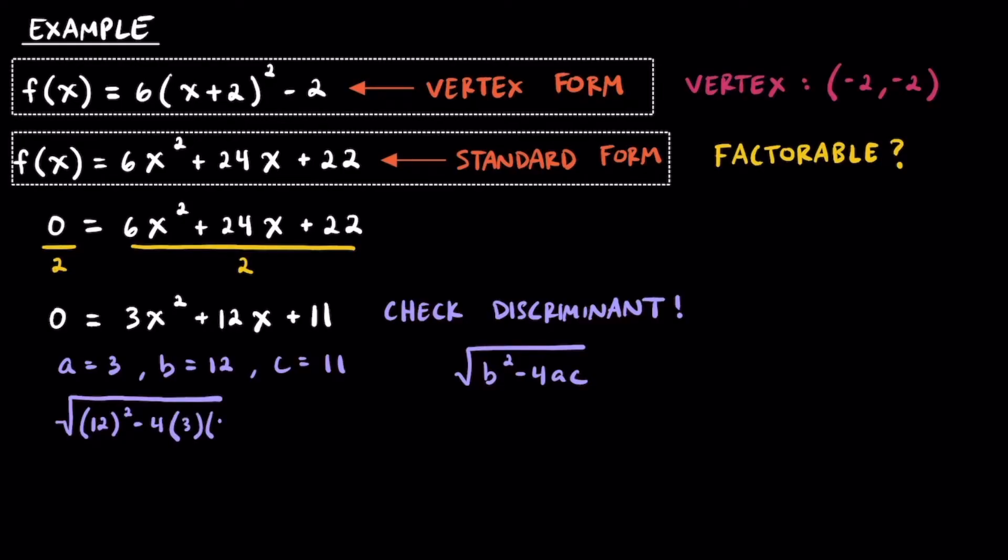Substituting in these values for a, b, and c, we find out that the discriminant value is a square root of 12. Because 12 is not a perfect square, we know that this quadratic, or trinomial, is not factorable.